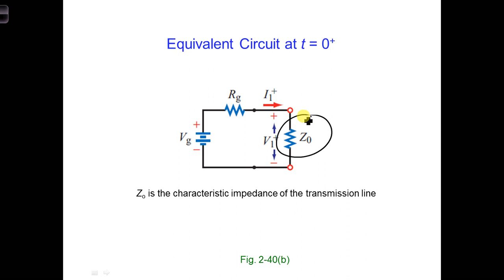The units for z-naught is ohms, and z-naught is a real number.